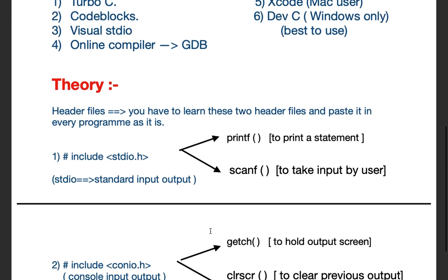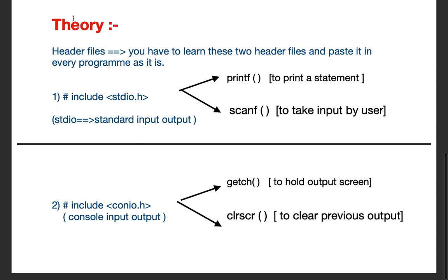Before moving further, let's discuss some theoretical part — header files. The first statement you are going to write in your program is the header file. There are two header files in C programming language: the first one is #include <stdio.h> and the second one is #include <conio.h>. A header file is basically a container in which some functions are present, and these functions are used to communicate with the compiler.